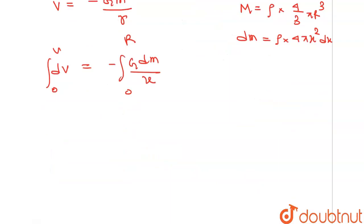Now solving this, we will get V obviously equals negative of G integral of rho into 4 pi x squared dx over x. x and x will get cancelled.